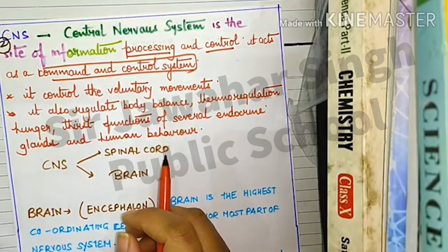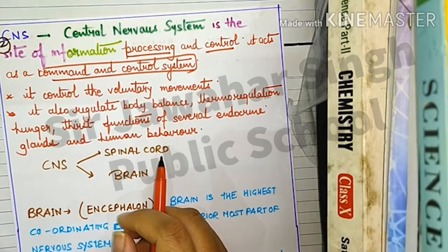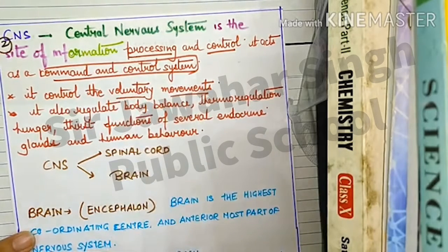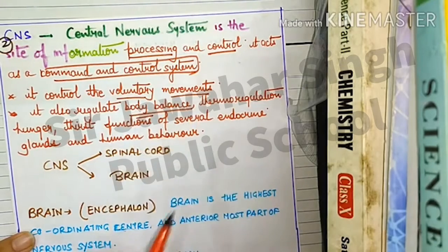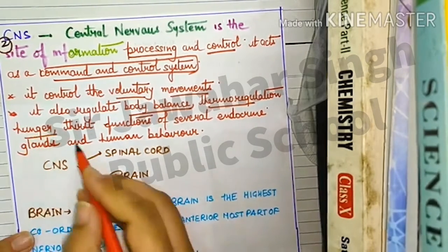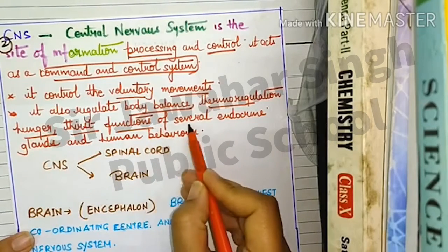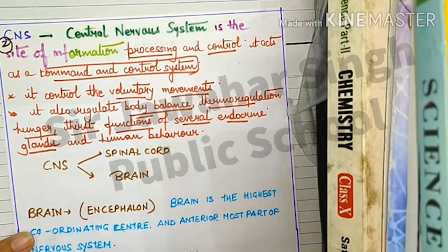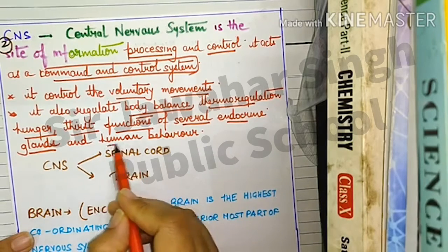The CNS includes the brain and spinal cord, and the brain is the highest coordinating center. It controls all voluntary movements — movements which are in our control. It also regulates body balance, body posture, body equilibrium, thermoregulation, hunger, thirst, and the function of several endocrine glands, also known as ductless glands, which play a vital role in specific functions and human behavior.